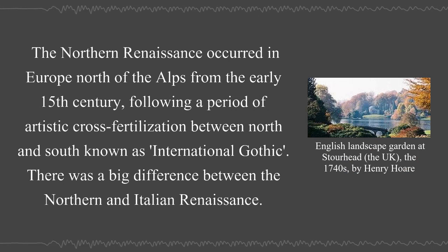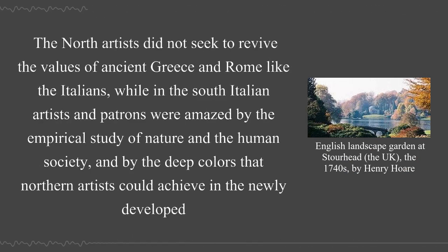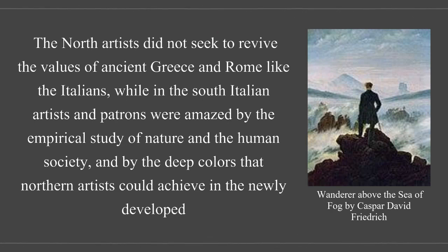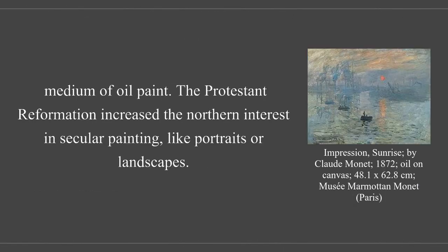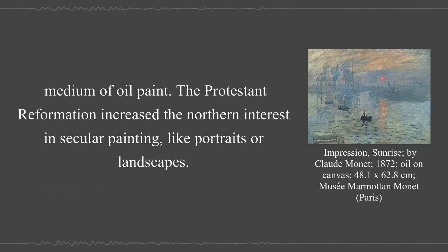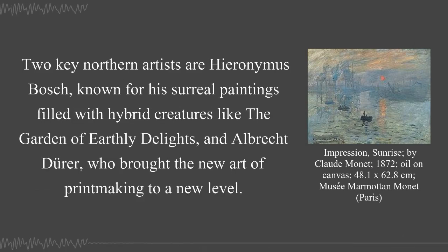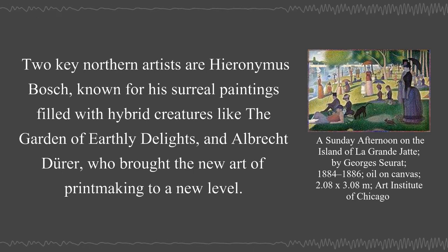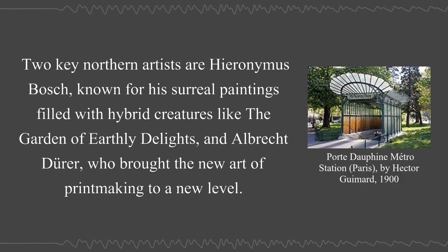There was a big difference between the Northern and Italian Renaissance. Northern artists did not seek to revive the values of ancient Greece and Rome like the Italians. While Italian artists and patrons were amazed by the empirical study of nature and human society, they were also struck by the deep colors that Northern artists could achieve in the newly developed medium of oil paint. The Protestant Reformation increased the Northern interest in secular painting like portraits or landscapes. Two key Northern artists are Hieronymus Bosch, known for his surreal paintings like the Garden of Earthly Delights, and Albrecht Dürer, who brought the new art of printmaking to a new level.